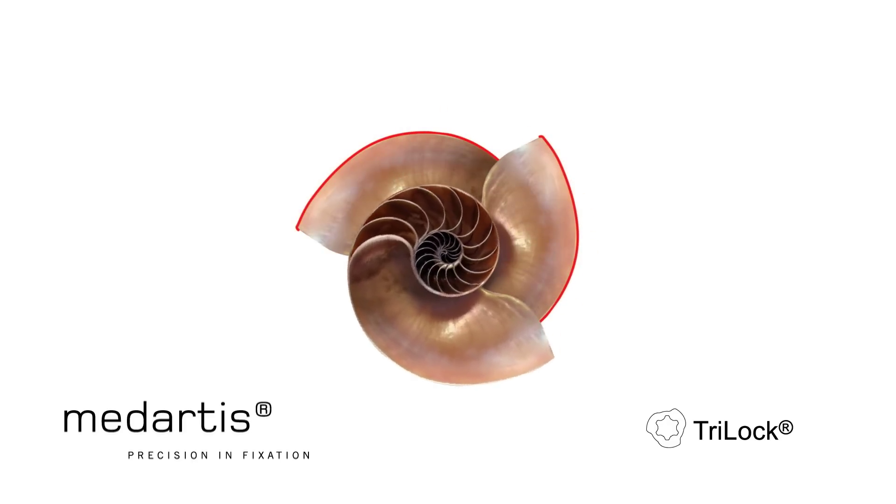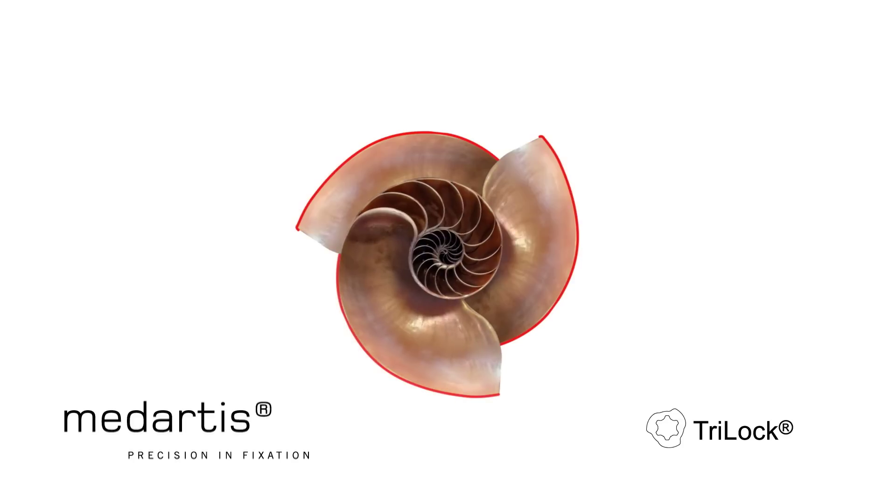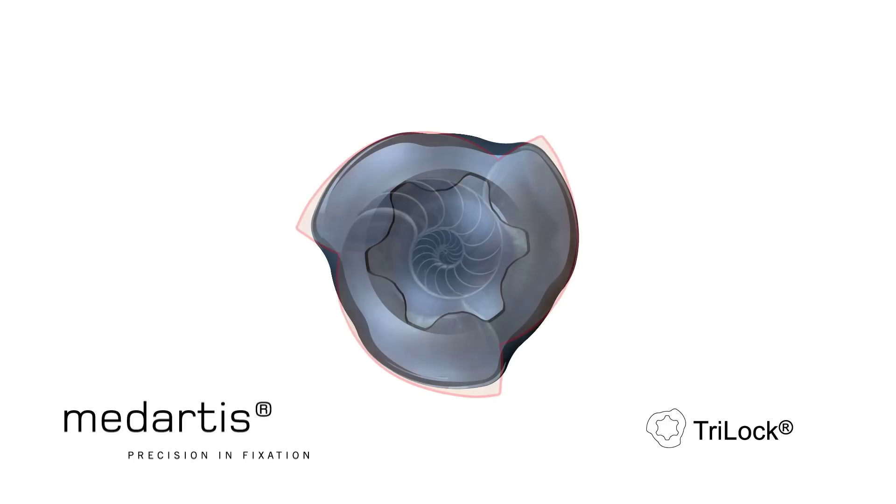The functional principle of the angular stability is based on the design of three single segments. Each of these segments derives from the natural form of the Fibonacci curve. In combination, this results in the typical contour of the Tri-Lock screw locking head.